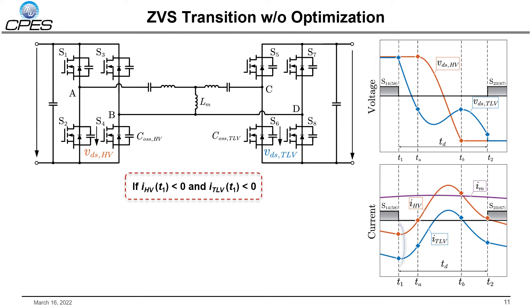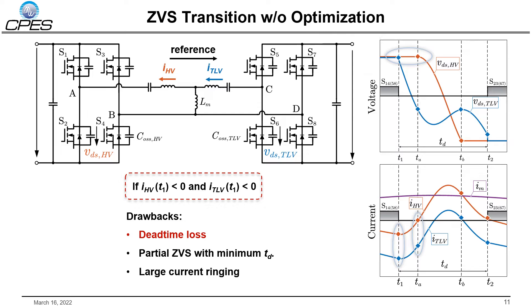Another example is when currents IHV and ITLV are both negative. The voltage VDS-HV will be clamped at T1 until IHV becomes zero, so both sides ZVS cannot begin at the same time. The drawbacks include dead time loss at the HV side because IHV goes through the body diode, as well as partial ZVS and large current ringing.